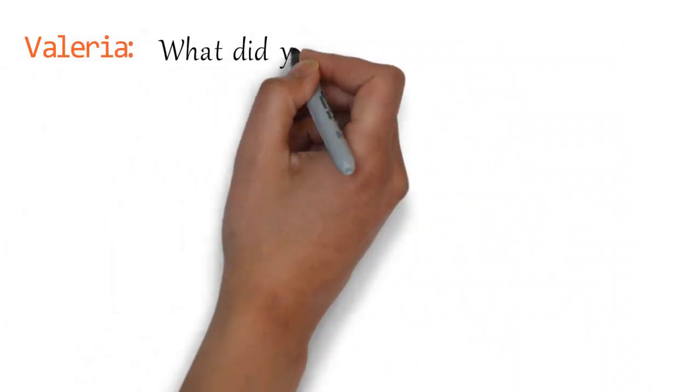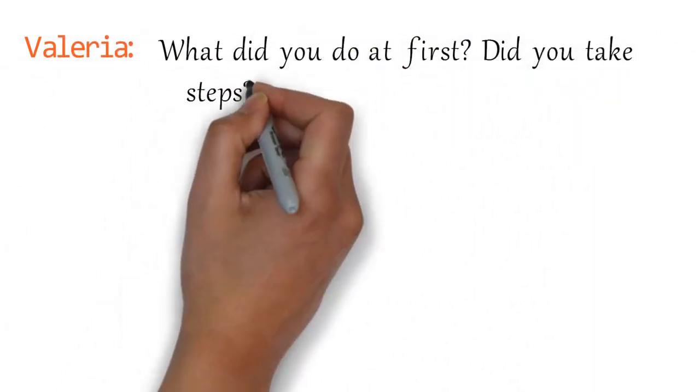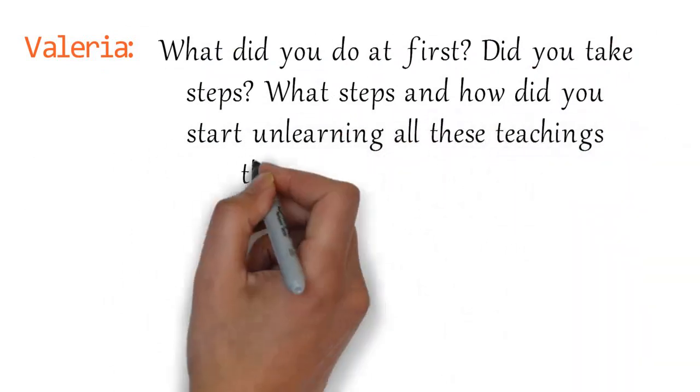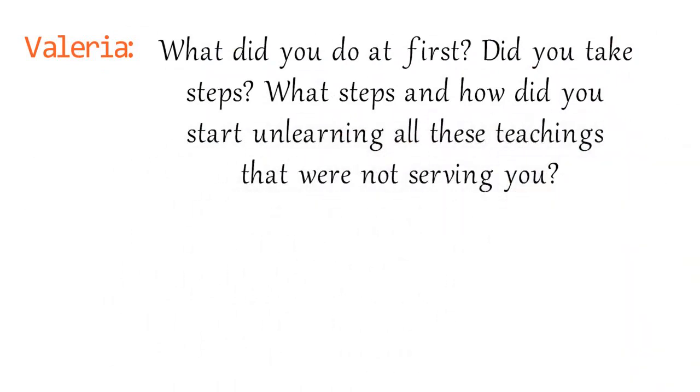What did you do at first? Did you take steps? What steps? And how did you start unlearning all these teachings that were not serving you?